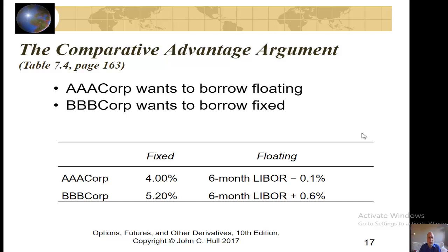Why would people engage in swaps? One of the main arguments is the comparative advantage argument. Let's say we have two corporations, AAA and BBB. If AAA corporation borrows fixed rate, it gets 4%. If it borrows floating rate, it gets six-month LIBOR minus 0.1%. BBB corporation, if it goes to the fixed rate market, it gets 5.2%. If it goes to the floating rate market, it gets six-month LIBOR plus 0.6%.